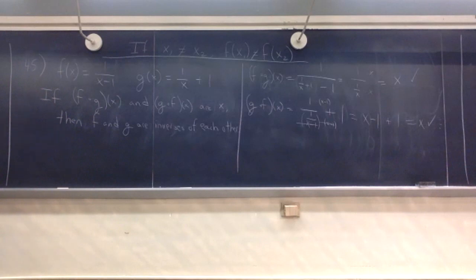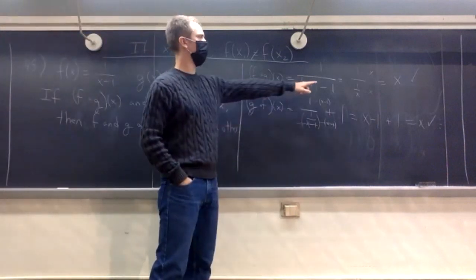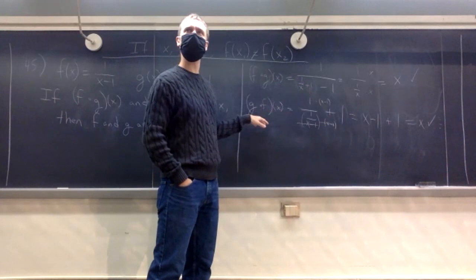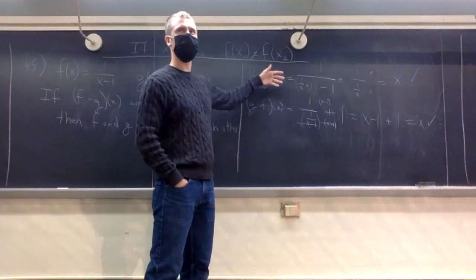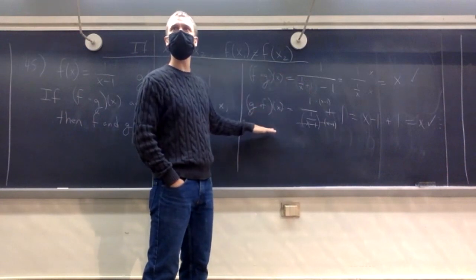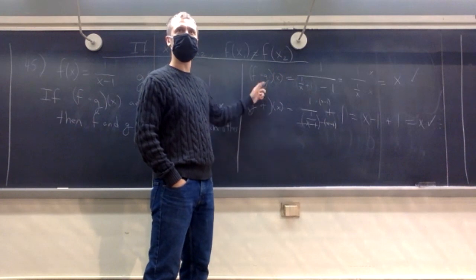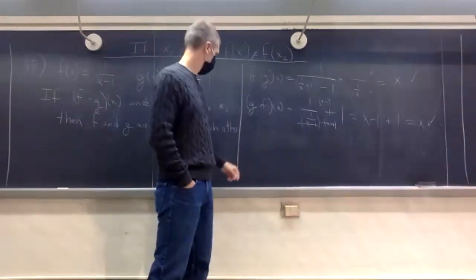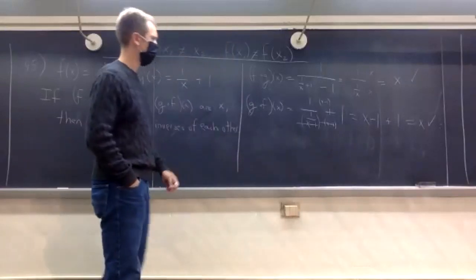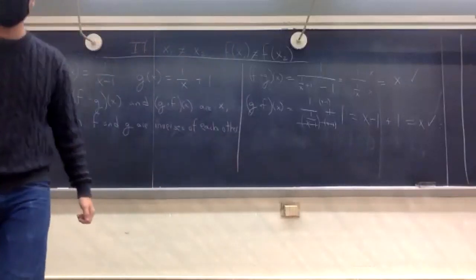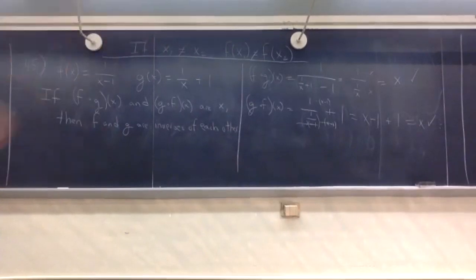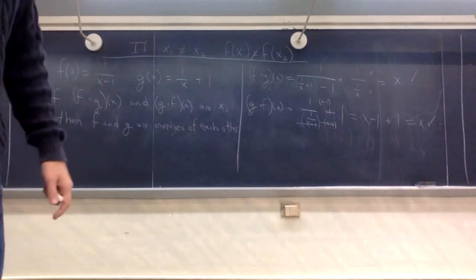A good question to consider later on is: are there functions that have one of these always being x but the other one not? Sort of a left-hand inverse but not a right-hand inverse — it only inverts one way but not the other way. It's a good question to consider.